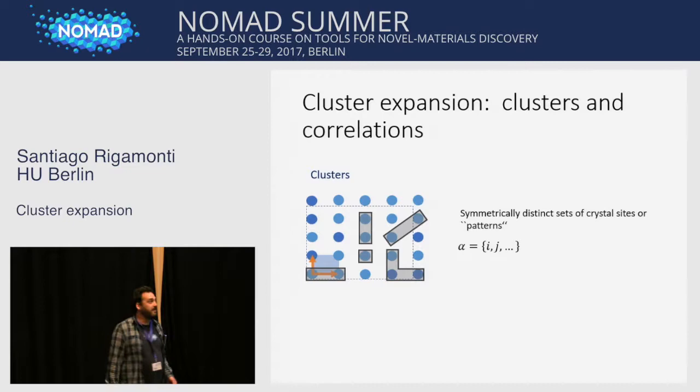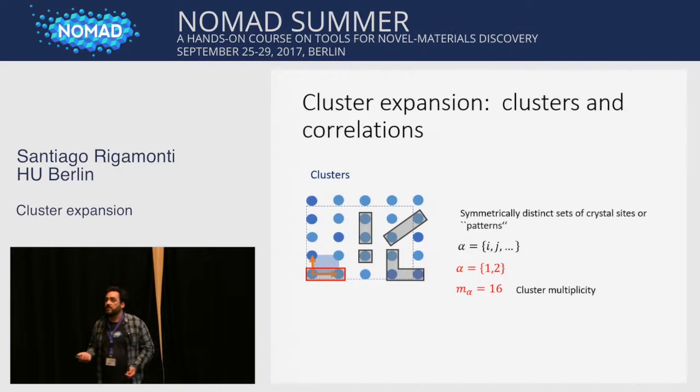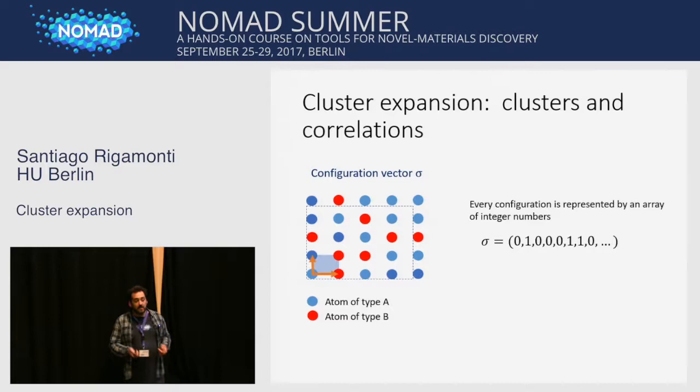However, in reality we are more systematic. What we do is define certain elements. One of those are the clusters, which are structural patterns indicated with crystal sites. This cluster is composed by sites one and two, for example. We also have to consider the multiplicities, which are the repetitions of this cluster by applying all the symmetry operations of the crystal. For this two-point cluster, we will have 16 repetitions. Another element we use is the configuration vector, as presented before.